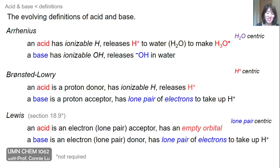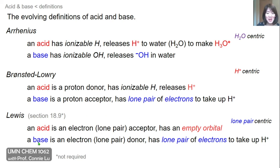These two definitions differ in that Arrhenius is solvent-centric — that solvent being water — while Bronsted-Lowry is proton-centric, where an acid is a proton donor and a base is a proton acceptor. There's also a third set of definitions in Section 18.9. Though not required, for completeness: a Lewis acid is redefined as an electron or lone pair acceptor — it no longer has to be a proton, just something with an empty orbital. Protons are basically an empty 1s orbital, so a proton fits the Lewis acid definition. The Lewis base is simply what the Bronsted-Lowry base was — it must have a lone pair of electrons. So Lewis acid-base definitions are lone pair-centric: the base is an electron donor, and the acid is an electron or lone pair acceptor.